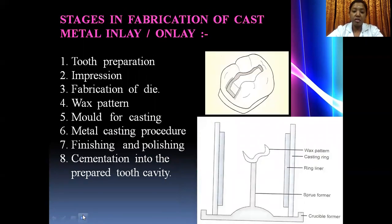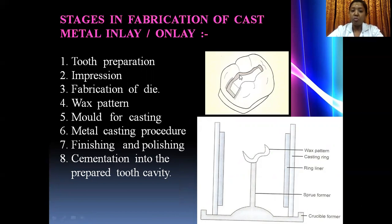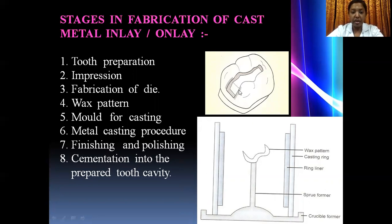Let us recollect the stages in the fabrication of a cast metal inlay and onlay. The first step is tooth preparation. Once completed, the next step is to take an impression. The impression is most commonly taken with putty and light body addition silicone; alginate can also be used, but ideally putty and light body should be used.